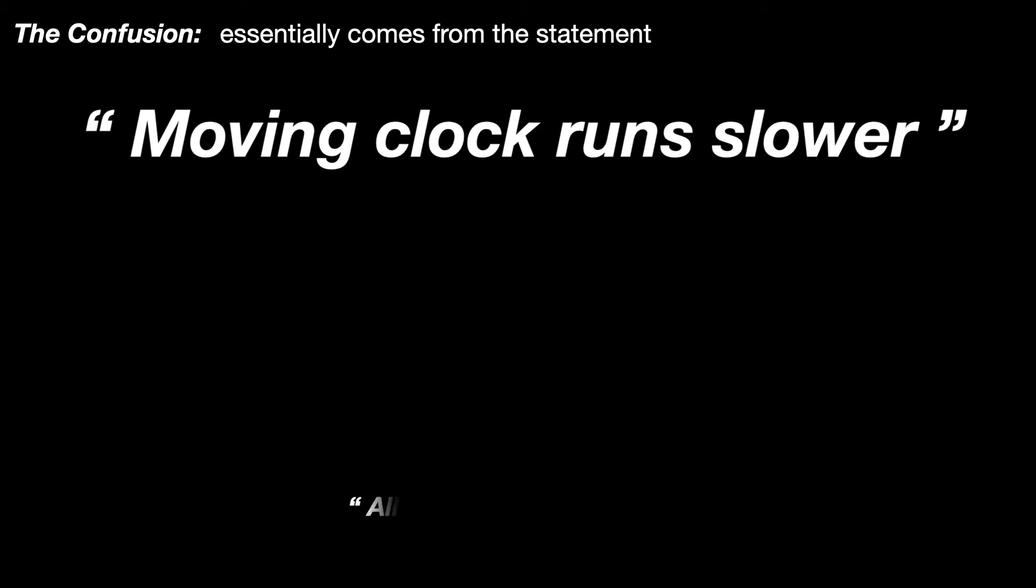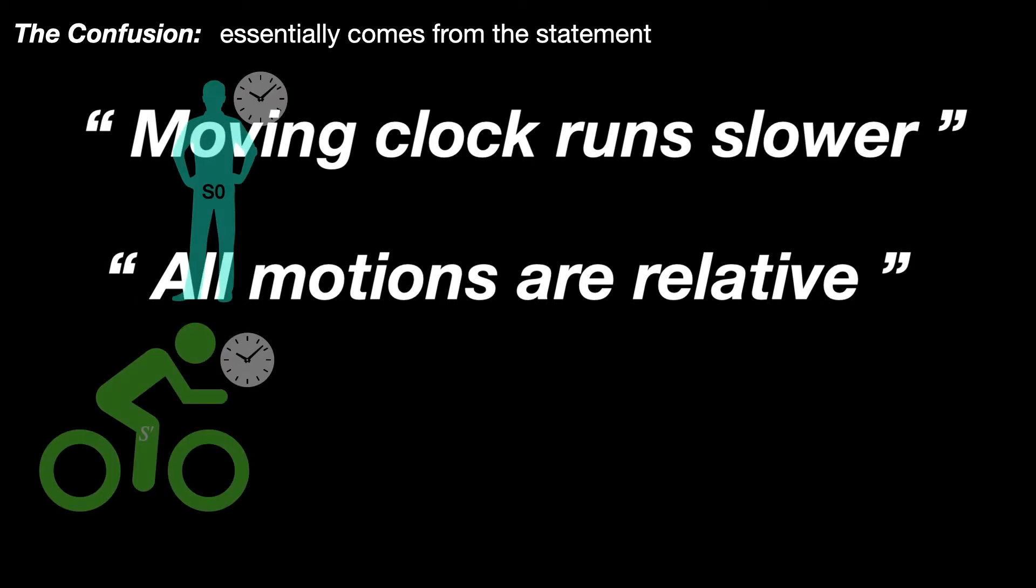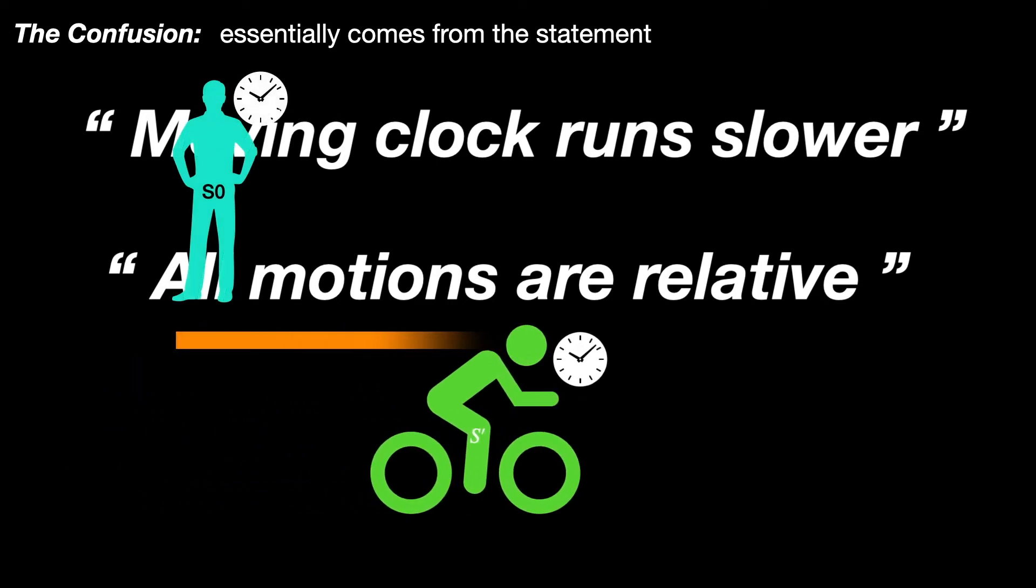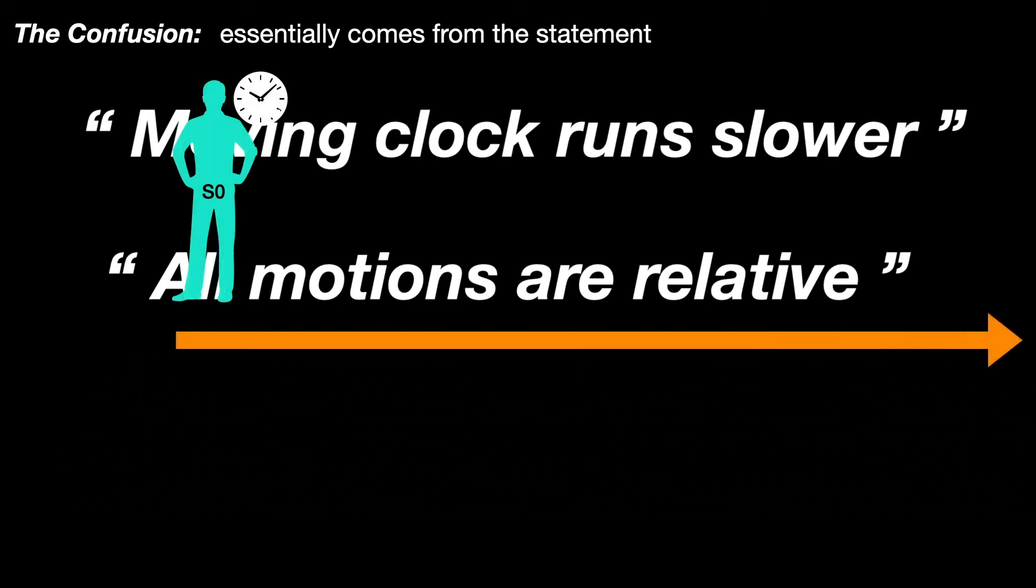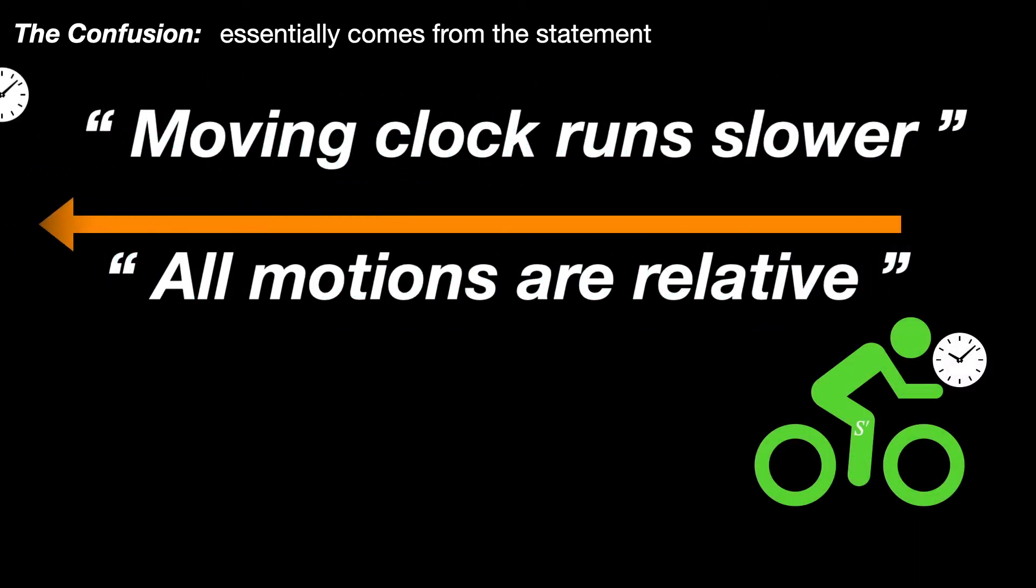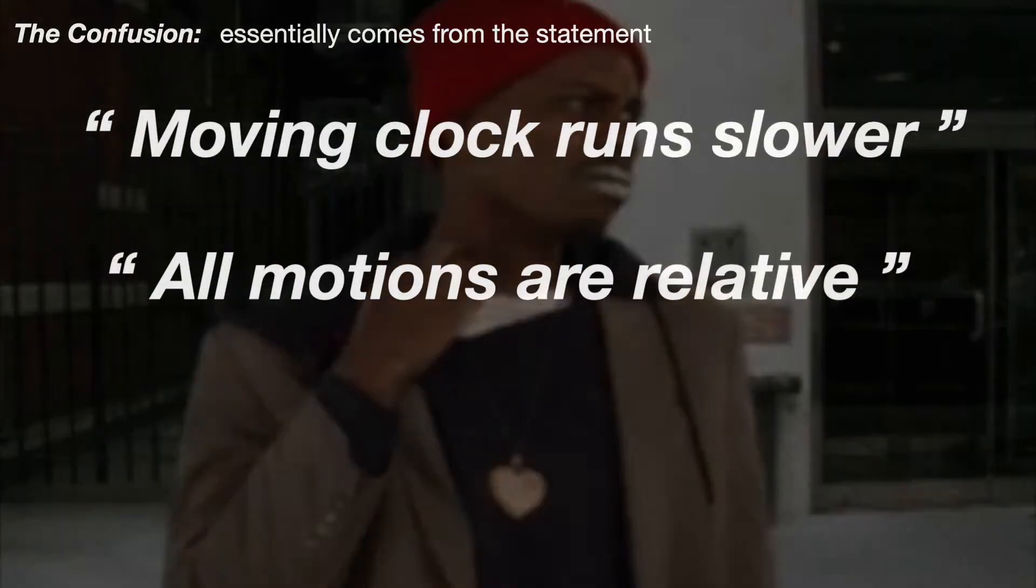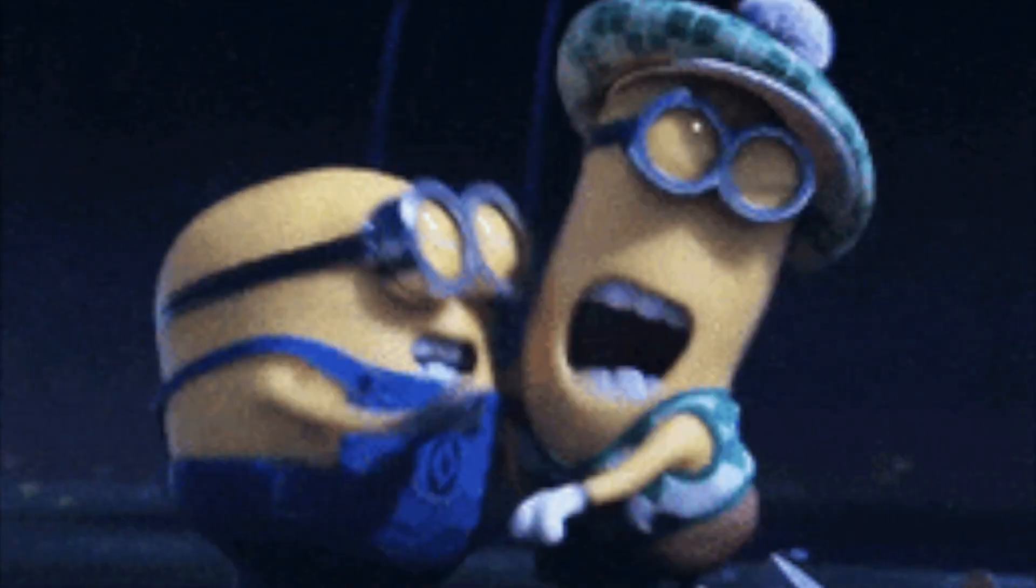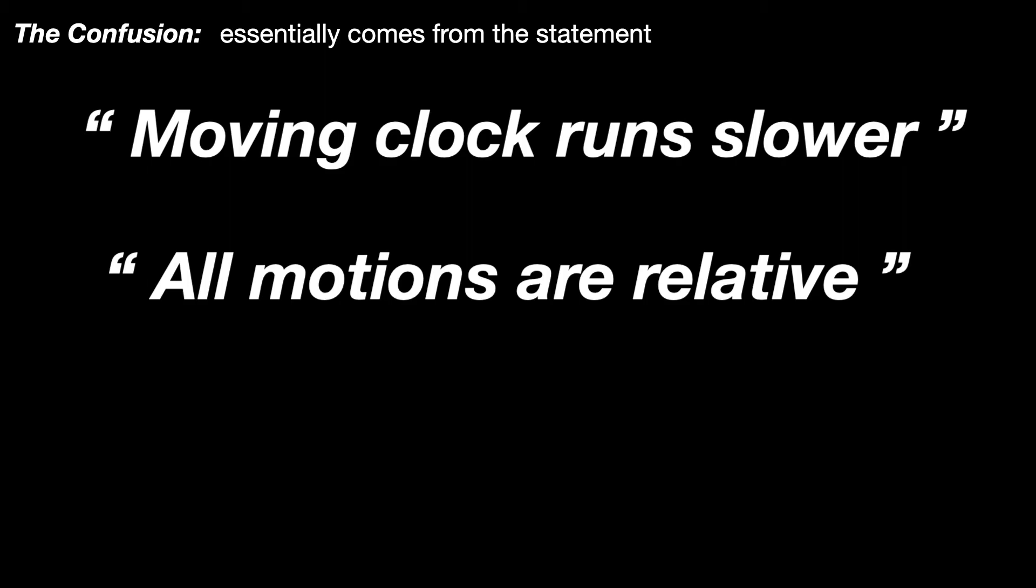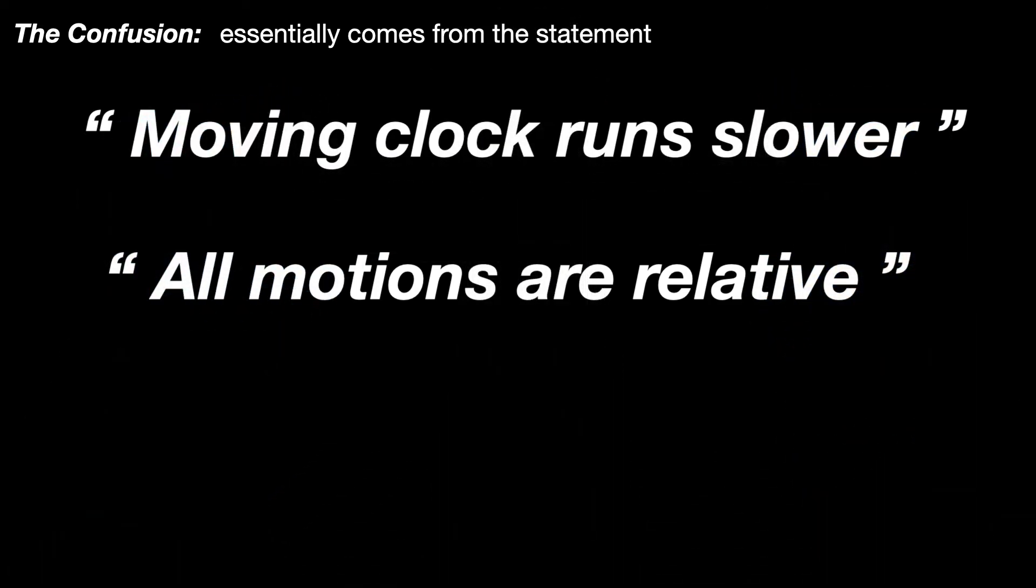We know special relativity says that all uniform motions are relative, right? So, there is no rest frame or moving frame in absolute terms. Therefore, from the point of view of the guy in S' frame, it's the S0 frame that is us with our clock that is moving uniformly. So, he can of course say that our clock is the moving one and therefore it must run slower than his. Thus, we are in a logical fix now. Both inertial observers can say that the other guy that is the observer in the other inertial frame is moving. So, both observers can claim that my clock runs faster and yours runs slower. But obviously, both cannot be right. That's the contradiction and hence the confusion.